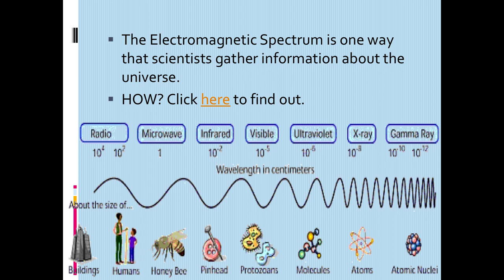Both of these PowerPoints are going to be in Google Classroom for your viewing pleasure. This is very testable information: radio, microwave, infrared, visible, ultraviolet, x-ray, and gamma rays. As you move from left to right on this screen, you can see the wavelengths go from 10 to the 4th power and only get smaller — the wavelengths get smaller. Wavelengths are measured from crest to crest, and as you go from left to right, they get smaller. But something very interesting happens — the waves get much stronger.